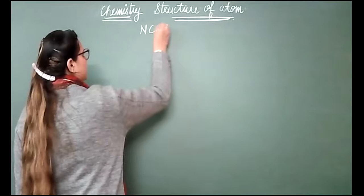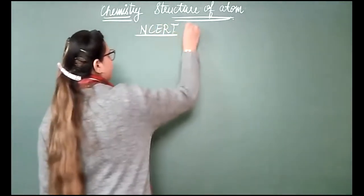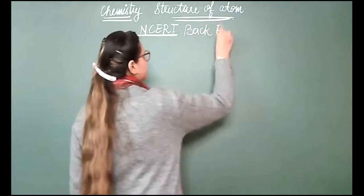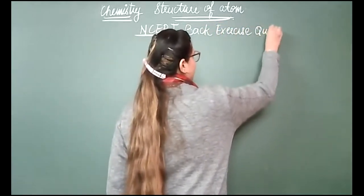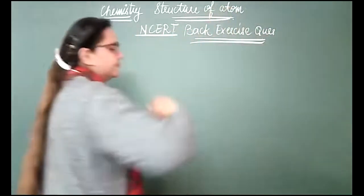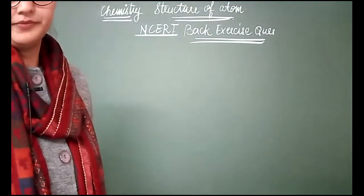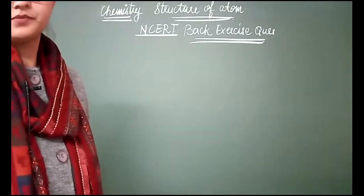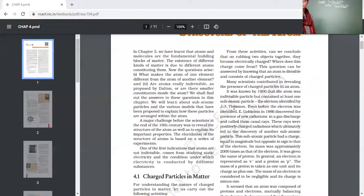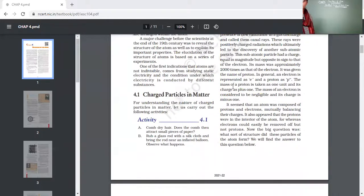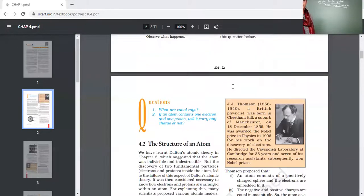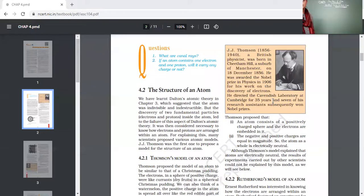Today we will be discussing the NCRT question answers or NCRT back exercise of this chapter. Here you are having the box questions for the discovery of each of the electrons, protons, and neutrons. You should be knowing this.